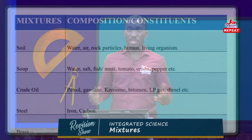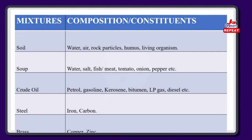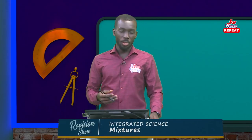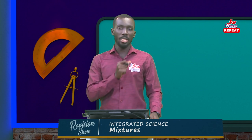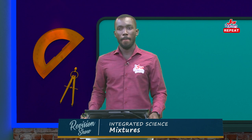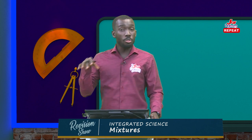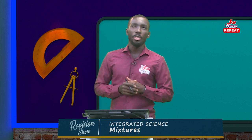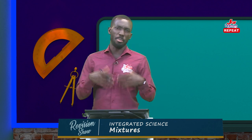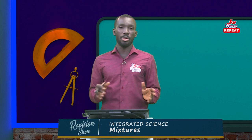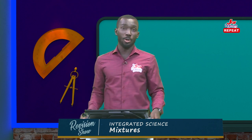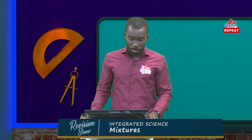Then we have crude oil. The compositions of crude oil include petrol, gasoline, kerosene, bitumen, LPG gas, and diesel. With this mixture it is complicated, because you cannot sit at the comfort of your home and get the different components — petrol, gasoline, kerosene and the rest — from crude oil, because crude oil has undergone a chemical process. Crude oil is obtained from great heat and pressure; when rubbish is dumped at a place for a long time and goes through great heat and pressure, it melts and you get your oil. So thank God we have oil in Ghana.